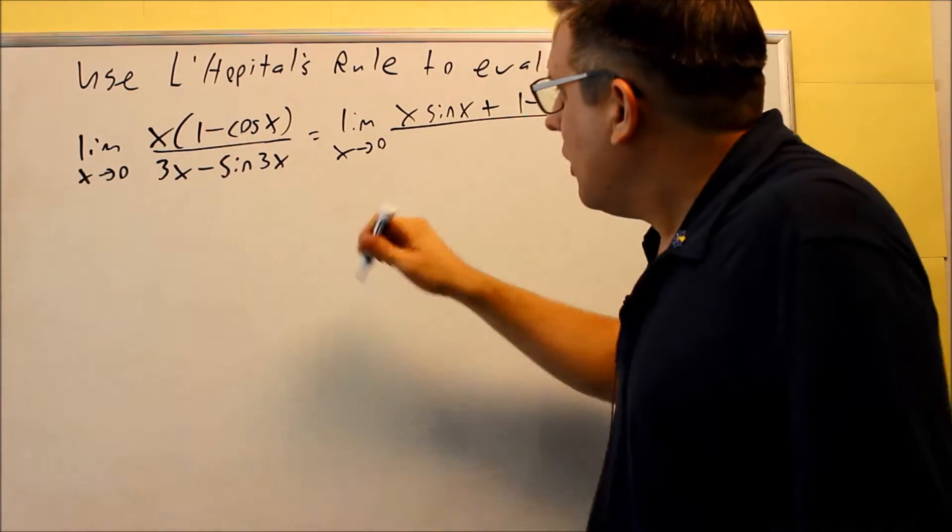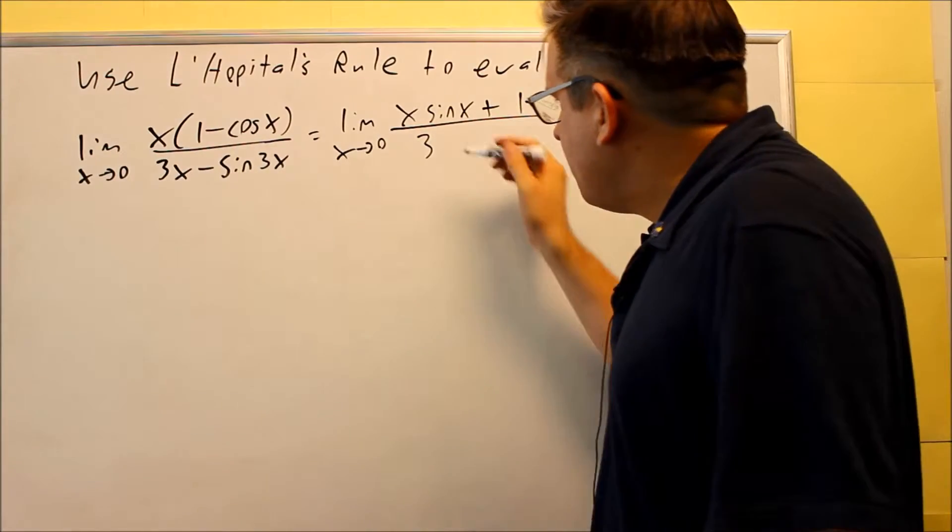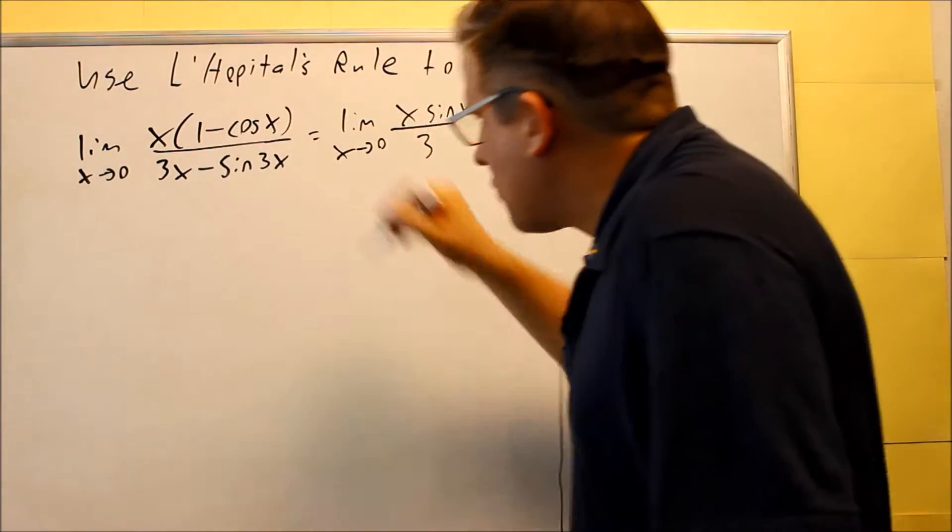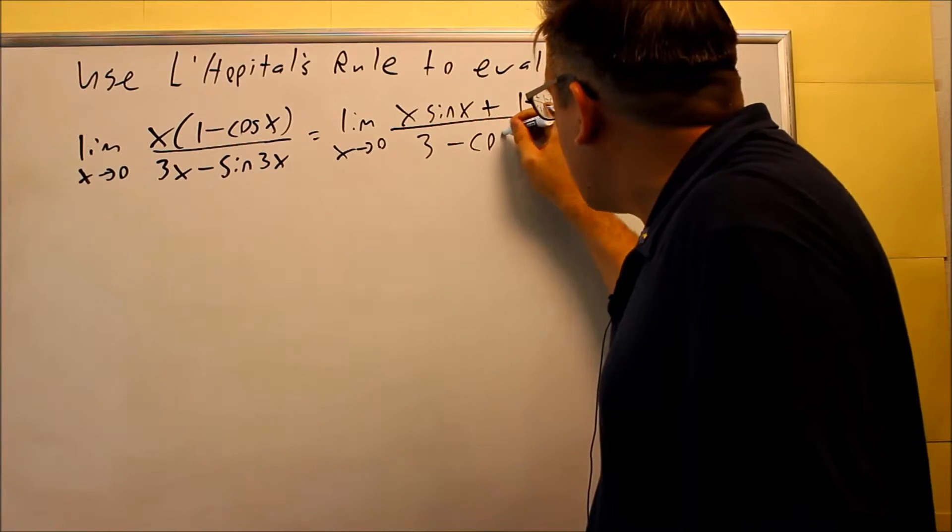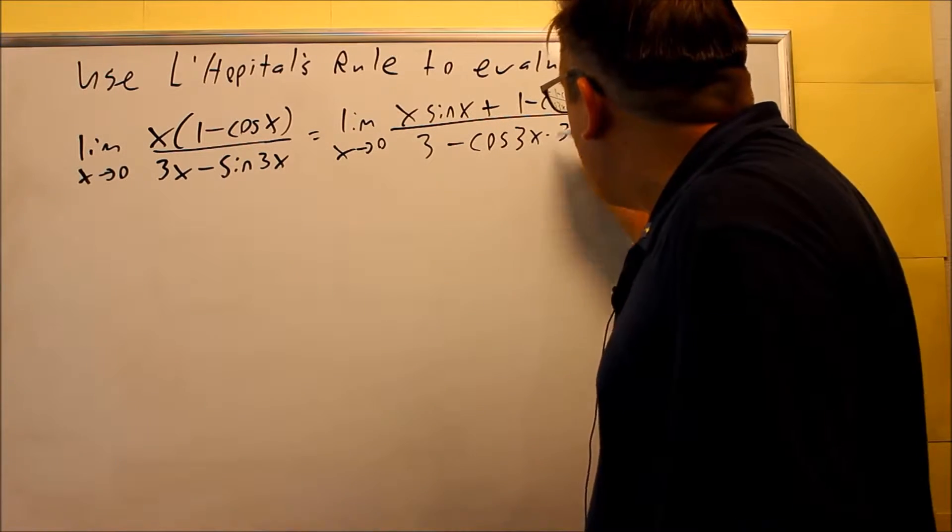Down below, the derivative of 3x is 3, and then we have, for this part, the derivative of sine is cosine, so minus cosine 3x, and then times 3.